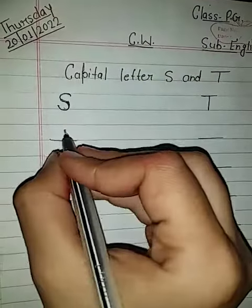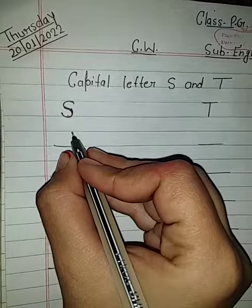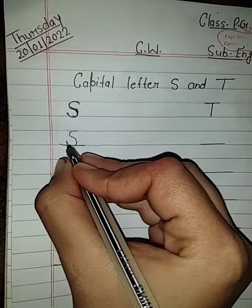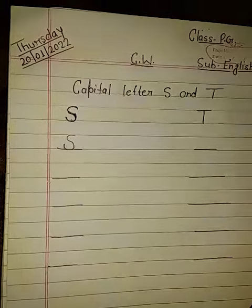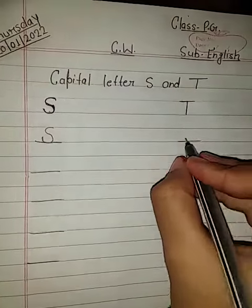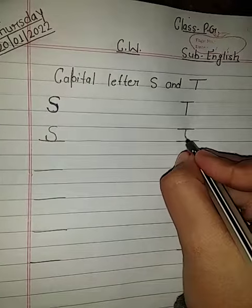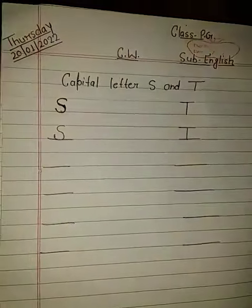So first, we will make S by making a small half circle and again, half a small circle. This is S. And then we will make T by making a sleeping line and we will make a standing line. We will make T.